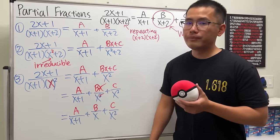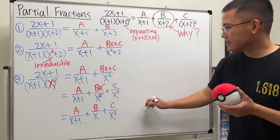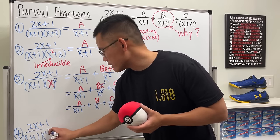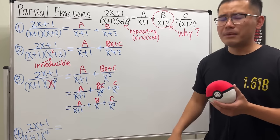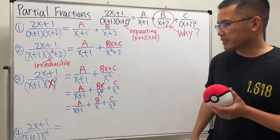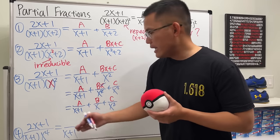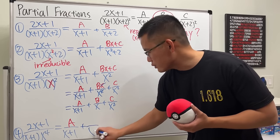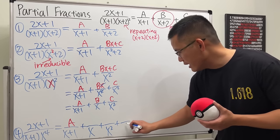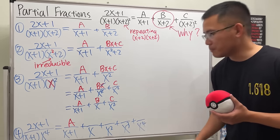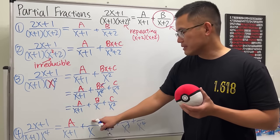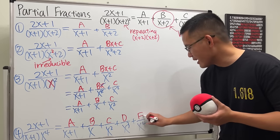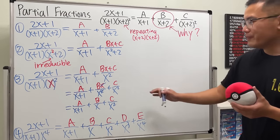I call this 'build up the power.' It means you start with x to the first power and keep adding one until you reach the given power. For example, if we have (2x+1) over (x+1) times x⁴, you don't need to redo this every time — just build up the power. First write A/(x+1), then start from x to the first, then x², then x³, then x⁴. Since each factor is linear, the top of each fraction will be a constant: B, then another constant, another constant, another constant.